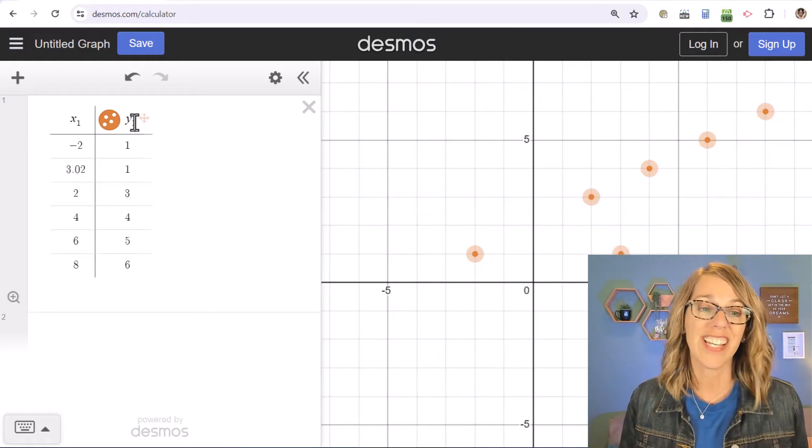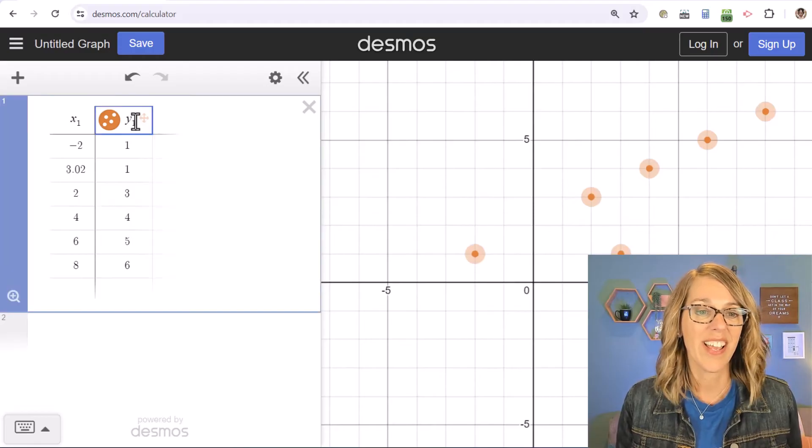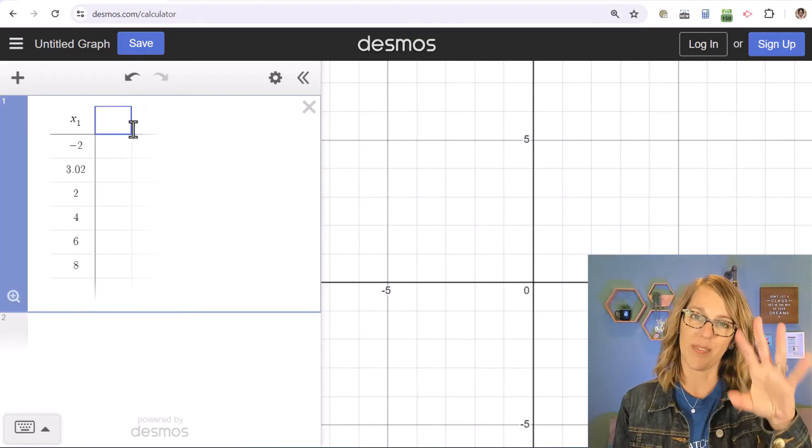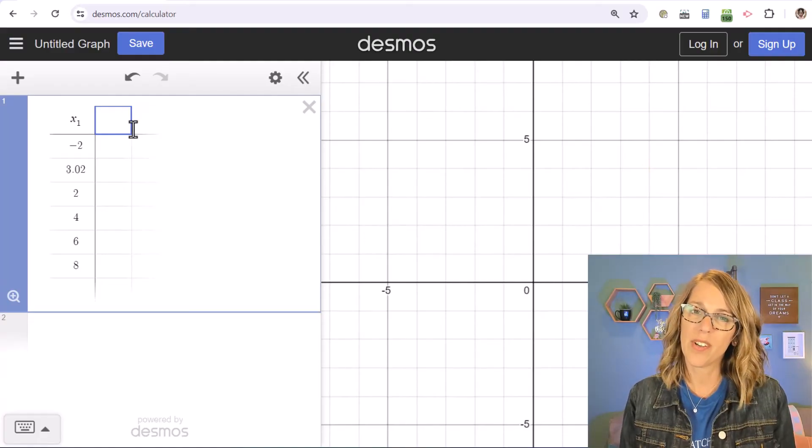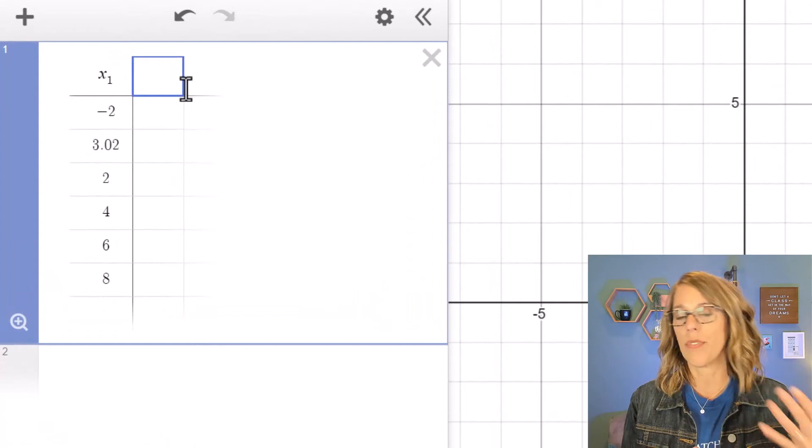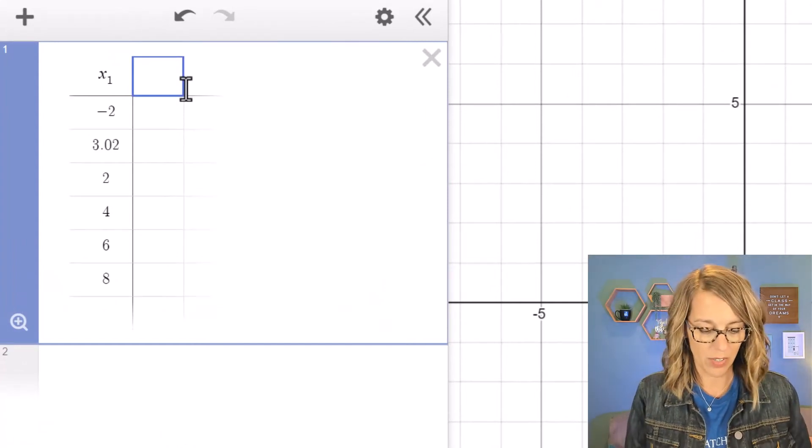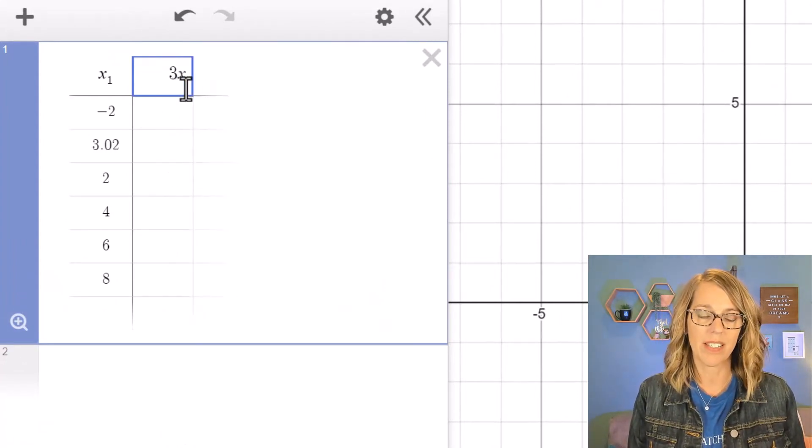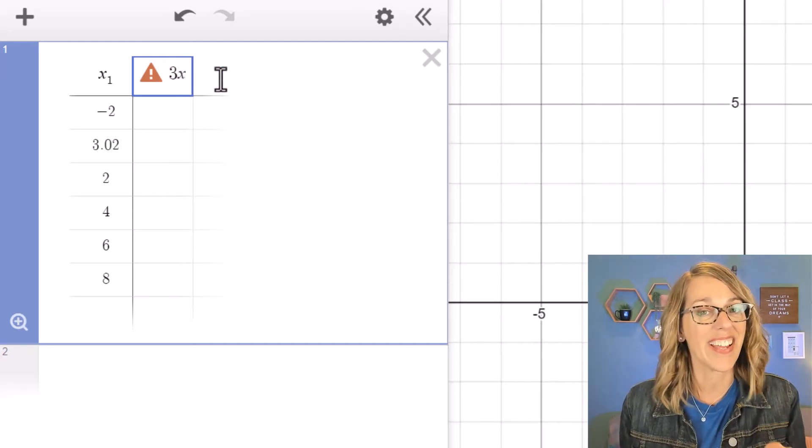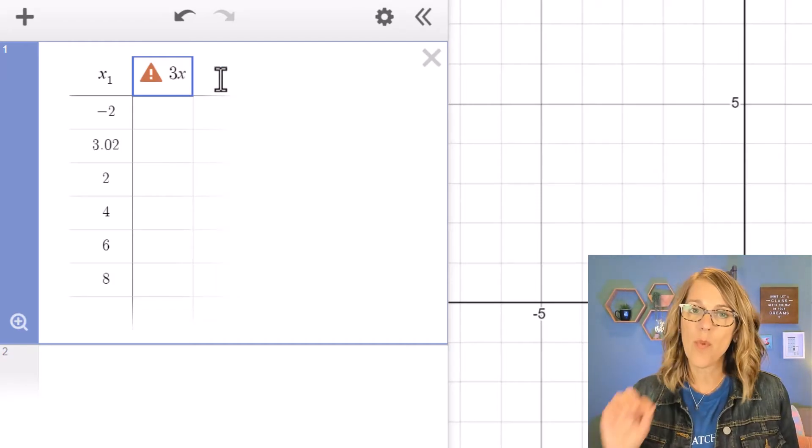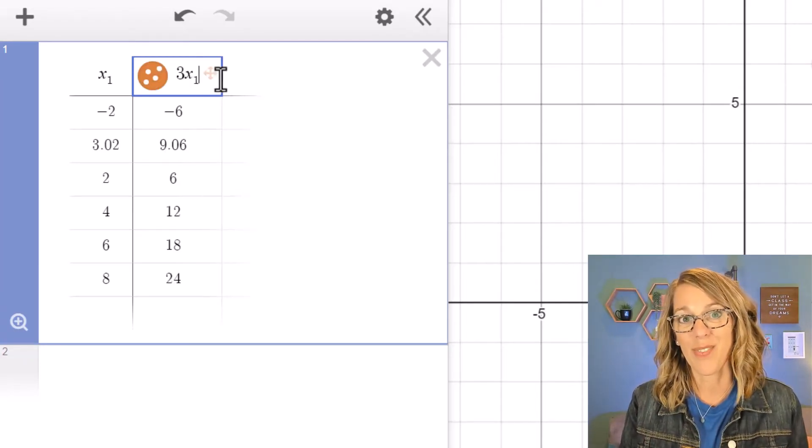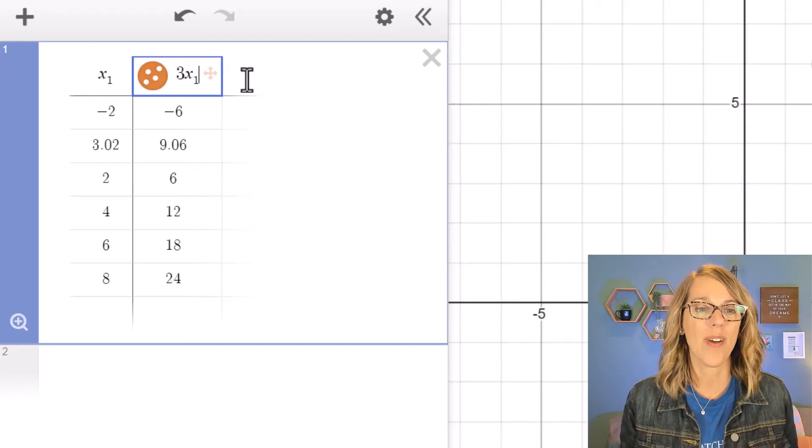I can also change this into a function instead. I'm going to get rid of that y one value. Notice how it gets rid of all of the points and I want to go ahead and type in a relationship. So let's say that we want three times all of those x values. So I'm going to go three times x but I specifically want the data values in x sub one, so I'm going to put in one right next to the x. It automatically subscripts and I've got three x sub one.